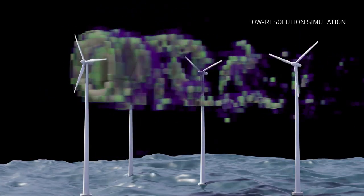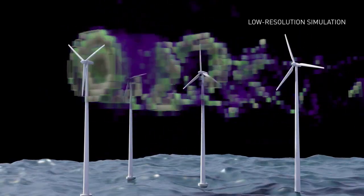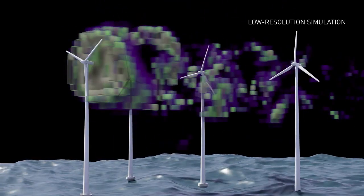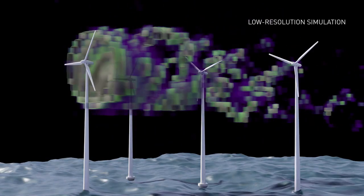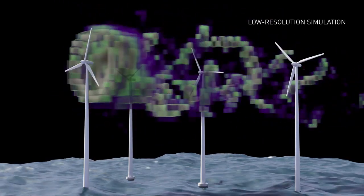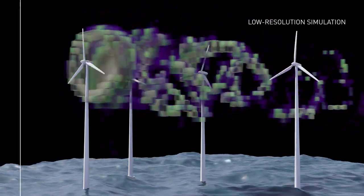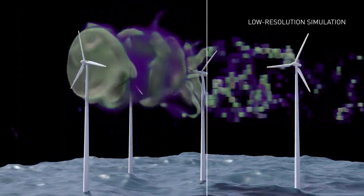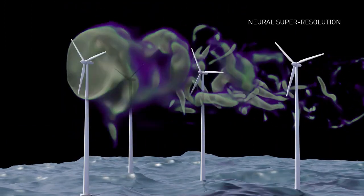Let's take a look at the same data presented in a way that clearly highlights the coarseness of the low-resolution simulation. Here, they look like pixelated blobs. In the super-resolved flow field, you can see the finer vortex structures.